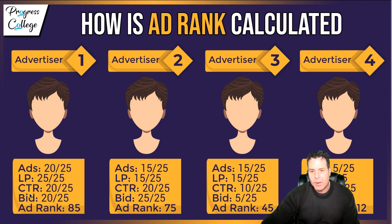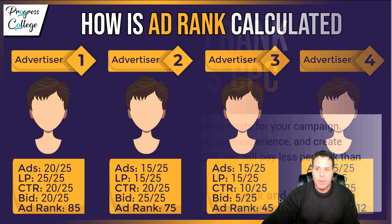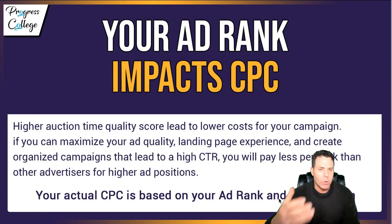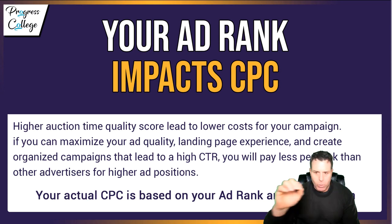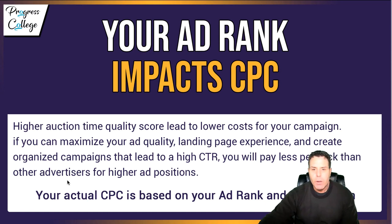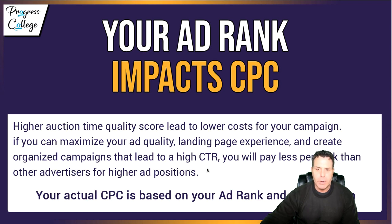Getting your ads, your landing page, and your CTR all dialed in are super important — because you can bid a lot less and actually rank a lot higher. If you're running traffic year-round, seven days a week, 365 days a year, and you work to improve your ad rank quality and all your quality scores over time, you're going to get a lot cheaper traffic and get a lot more business for a lot less cost. Higher auction-time quality scores lead to lower costs for your campaign. If you maximize your ad quality, landing page experience, and create organized campaigns that lead to a high CTR, you will pay less per click than other advertisers for higher positions. Your actual CPC is based on your ad rank and the competition.